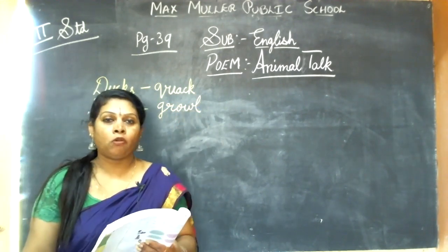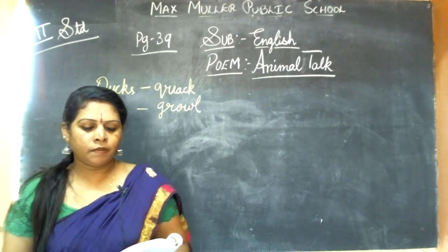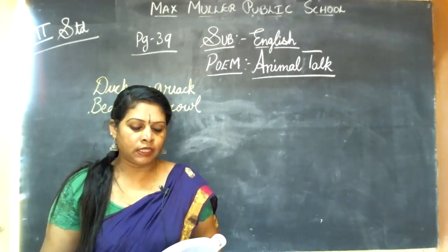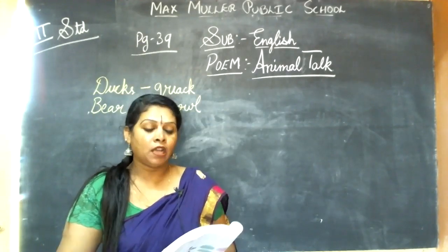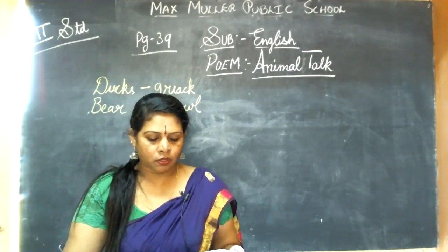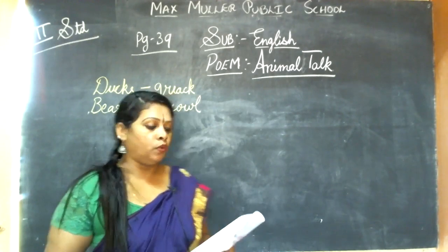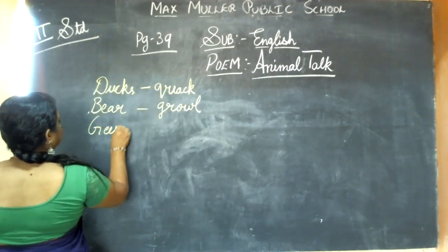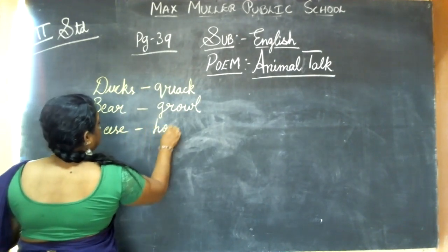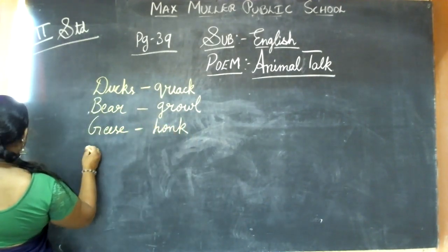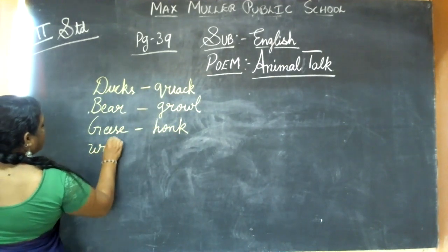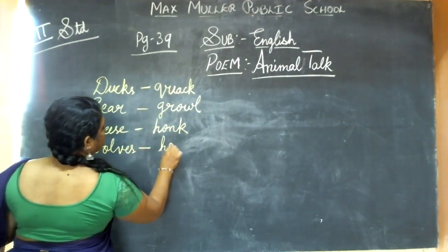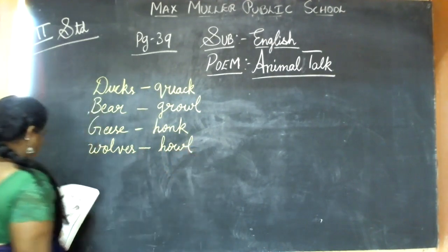Geese honk. Honk means the sound that they produce. You know goose, geese — so they honk. Wolves howl. The sound of the geese is honk. Wolves — the sound of the wolf is howl.